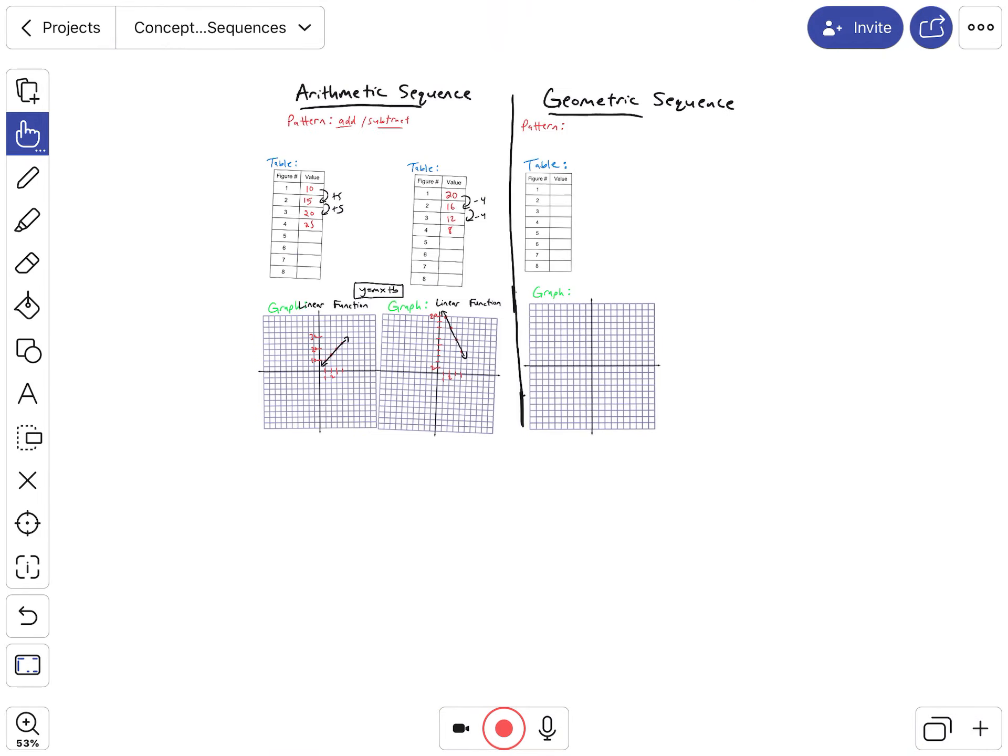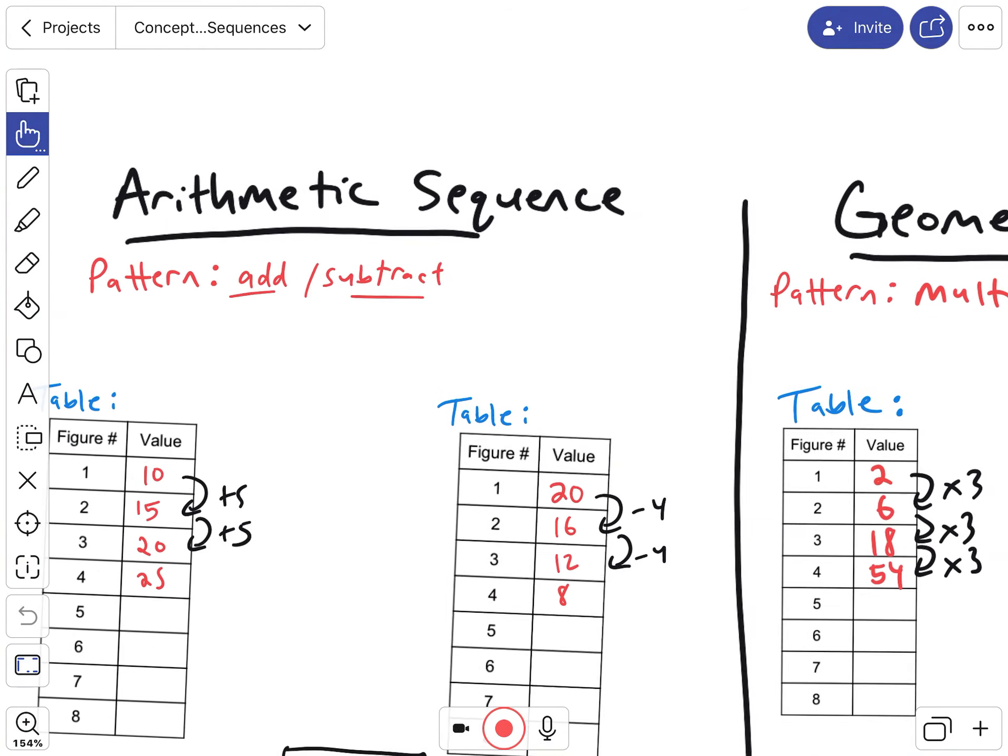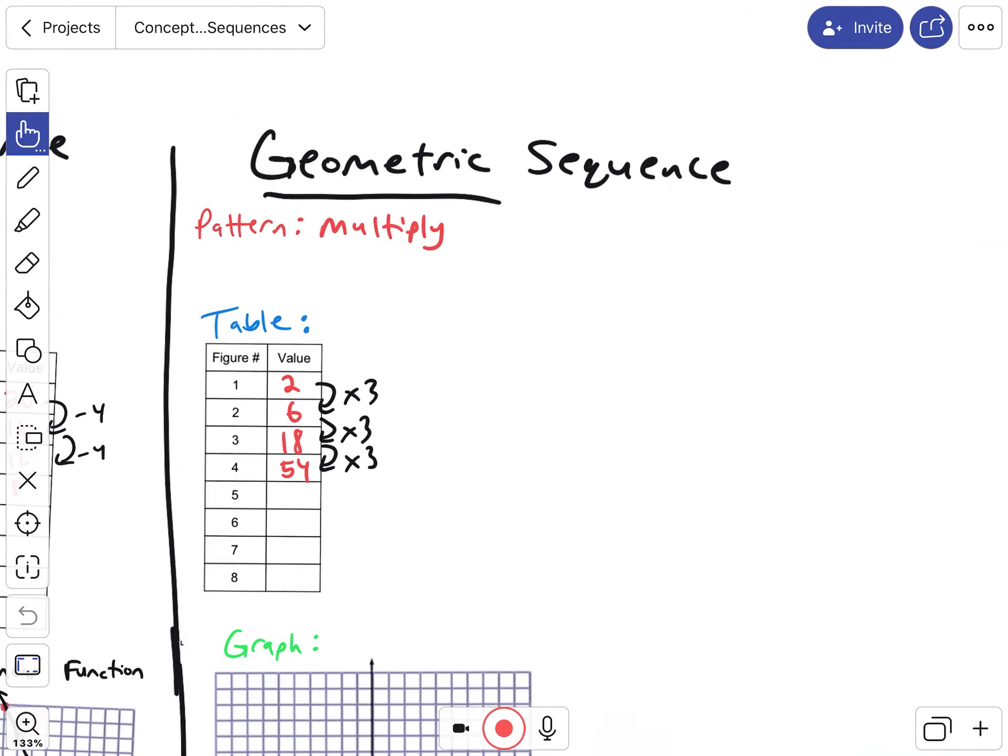The next thing I want to focus in on is the geometric. Geometric, the pattern is when you multiply by a certain number. So let's say I start with 2, and then I multiply it by 3. So 2 times 3 is 6. 6 times 3 is 18. 18 times 3 is 54. And so that would be this pattern, times 3, times 3, where the arithmetic sequence was adding and subtracting. Well, the geometric sequence is multiplying.